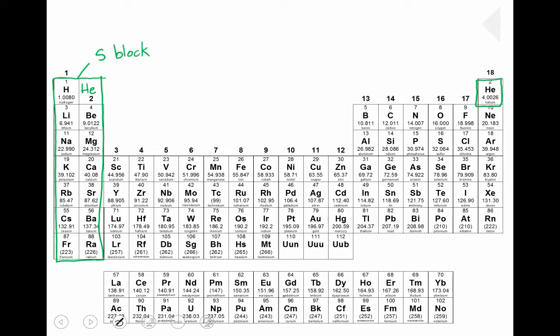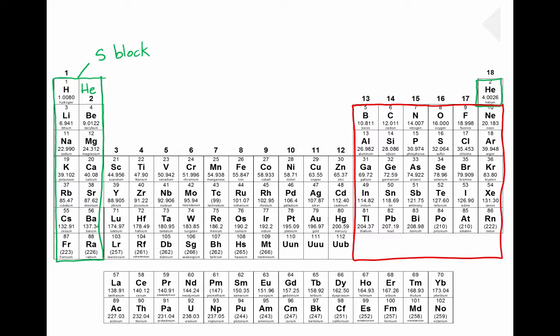The next thing I'll label are the P block elements, which are found in this part of the periodic table. Even though elements 113 through 118 are not on my table, I'm going to make room for them. These elements here make up what we call the P block elements.